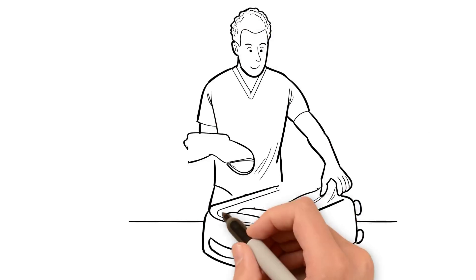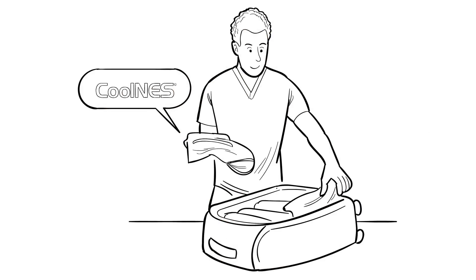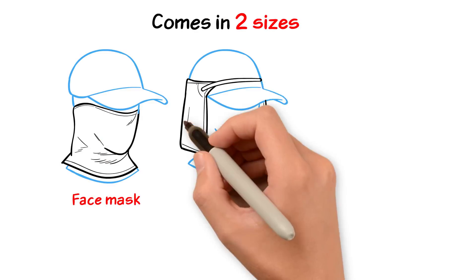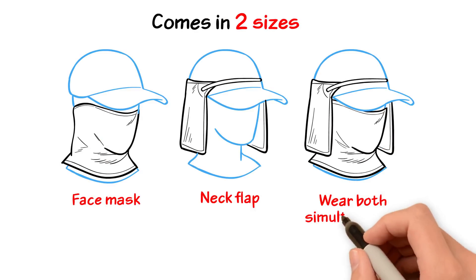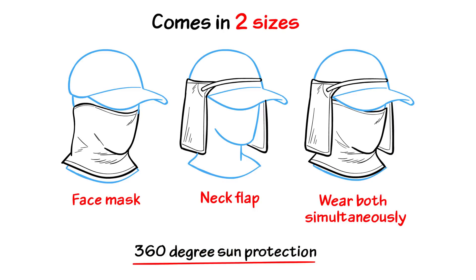make sure to take your Coolness with you. This amazing product comes in two sizes and can be worn as a neck flap or a face mask. Some wear both simultaneously to obtain 360-degree sun protection.